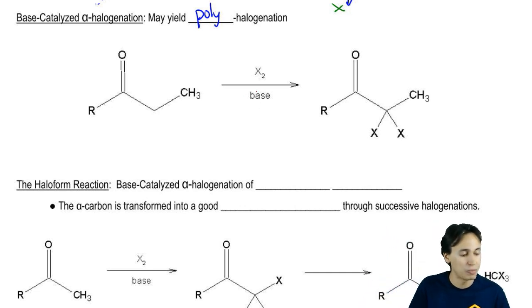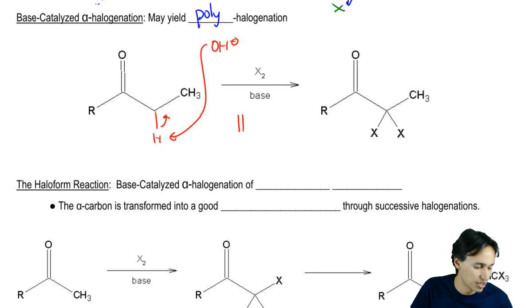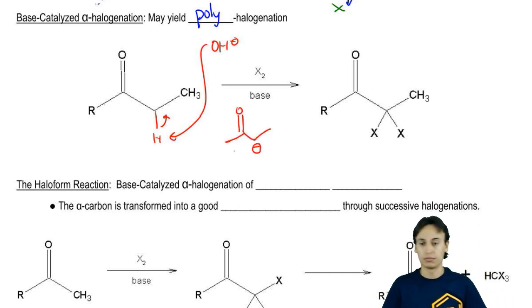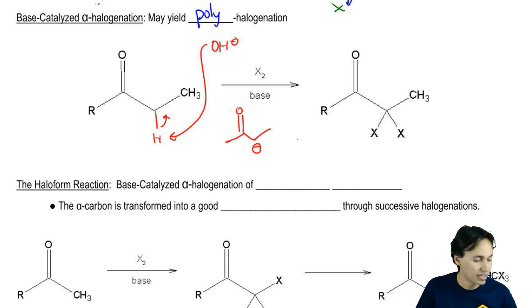In a base catalyzed mechanism, imagine that I'm using OH negative and that I'm just forming an enolate right away. That enolate looks like this, with a negative charge. Well, that negative charge can react with X2, do this, do that, go here, go there and give me my halogen.